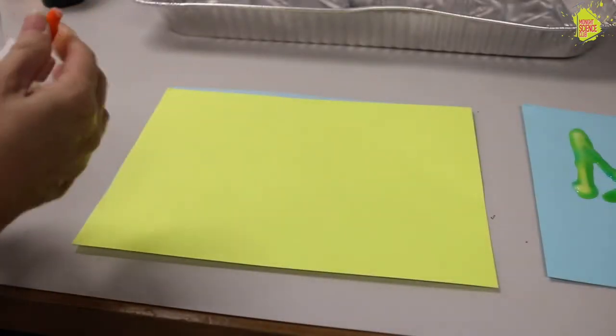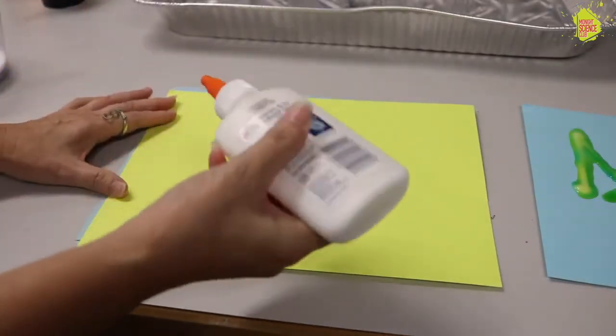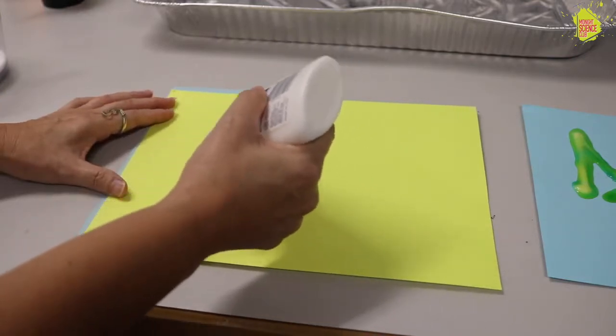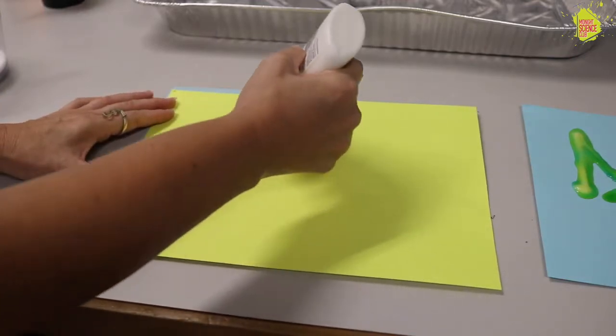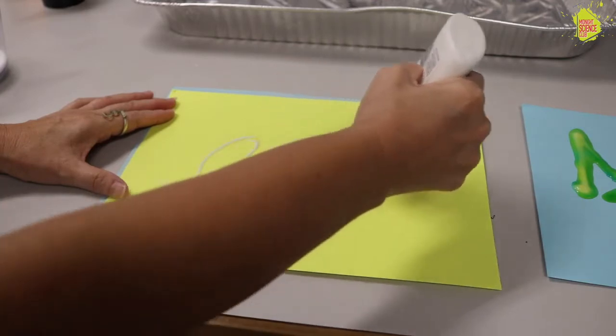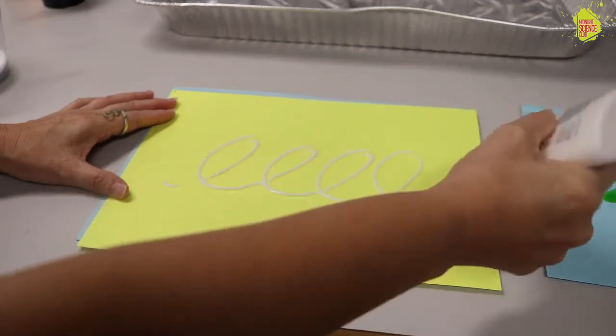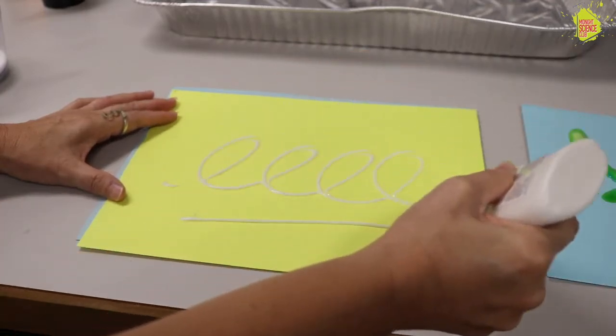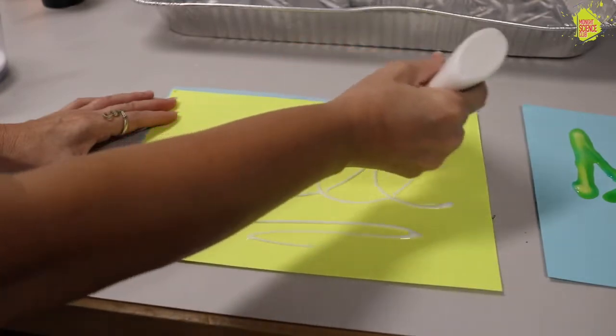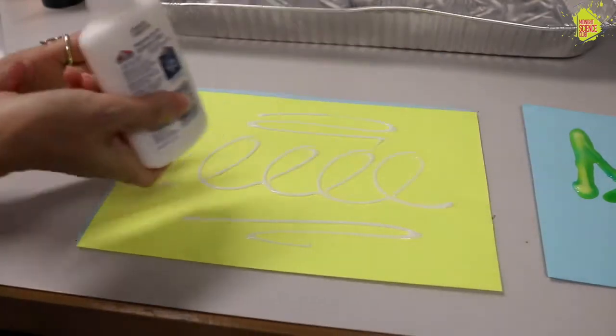So all you need is some glue, and you're going to choose a design and make it with the glue. Let's just make something simple today. I'm going to make some loops and some lines, something simple since I already made my name.